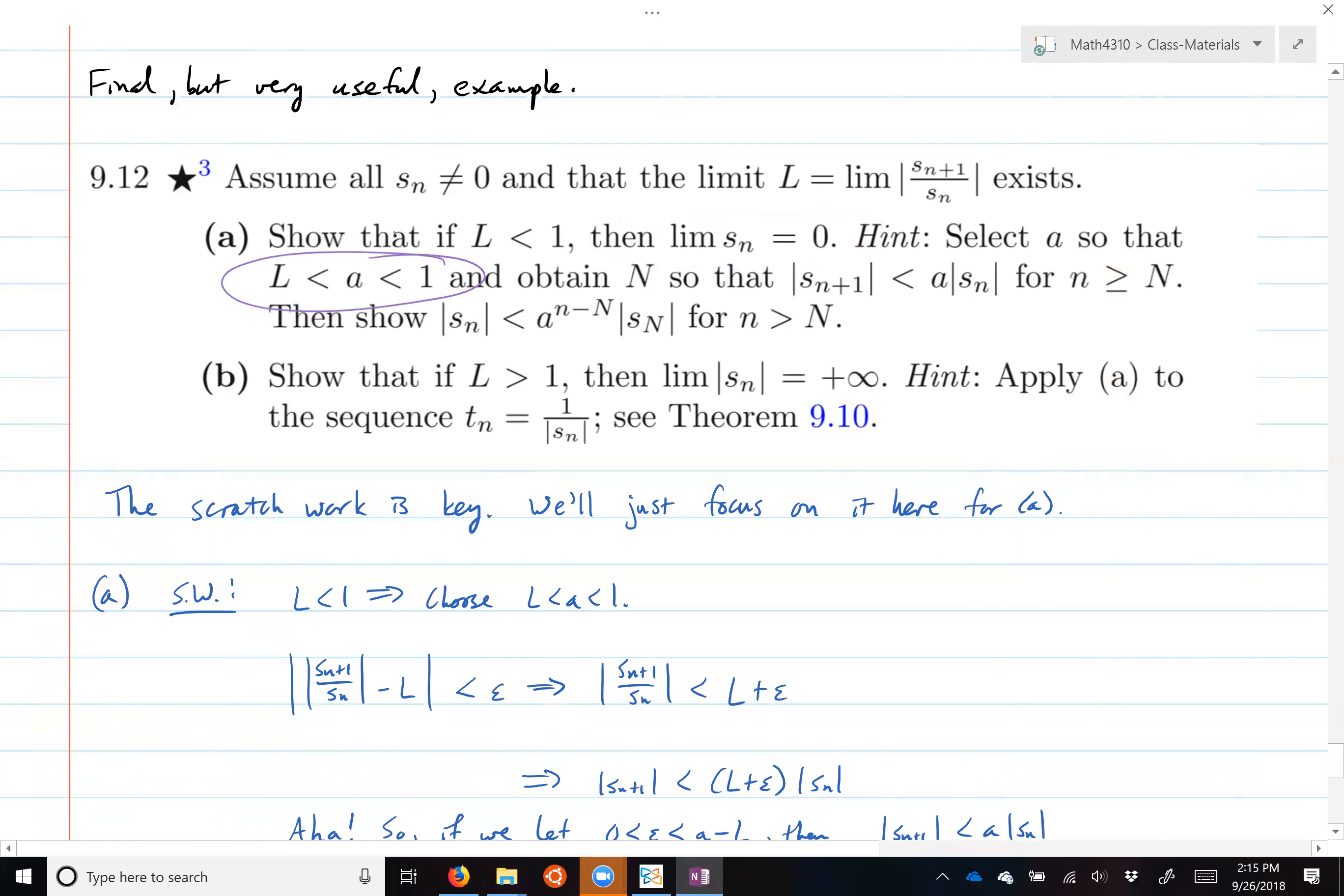If the limit of this comparison of just one term of the sequence to another, if you have that this limit of this ratio is less than 1, then the series converges absolutely.